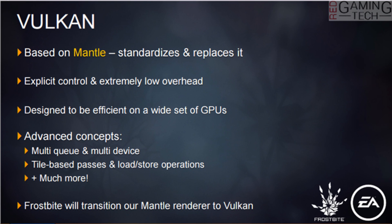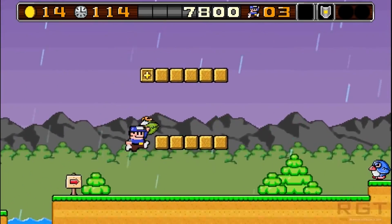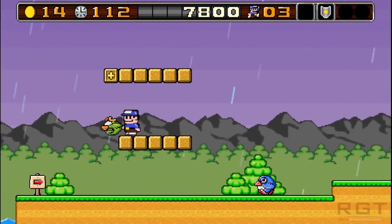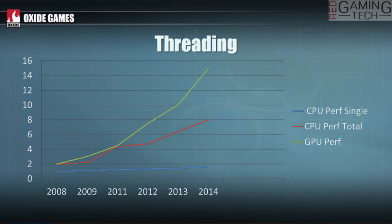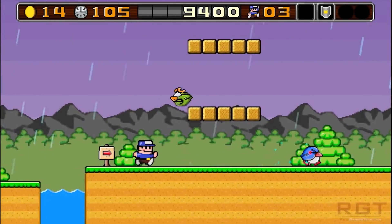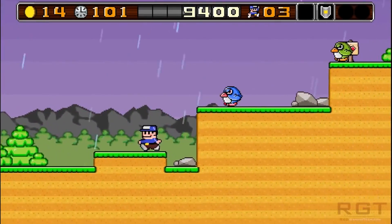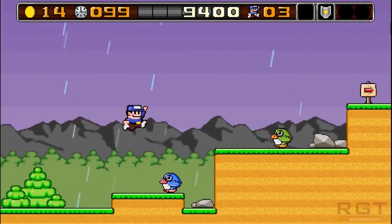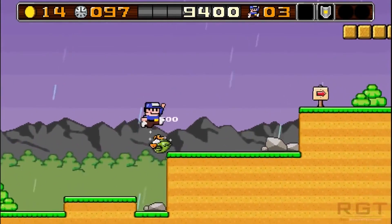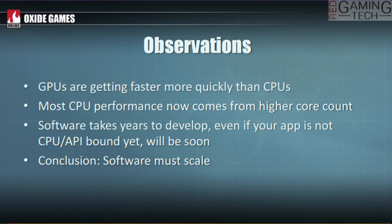Vulkan basically stripped away the AMD, or GCN rather, exclusive features, and made it functional across a multitude of different GPUs. For example, you can use it with various GeForce cards, Intel IGPs, and so on. Therefore, in a sense, both standards are competing against one another in the marketplace.